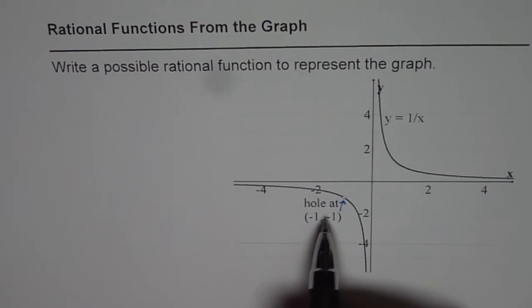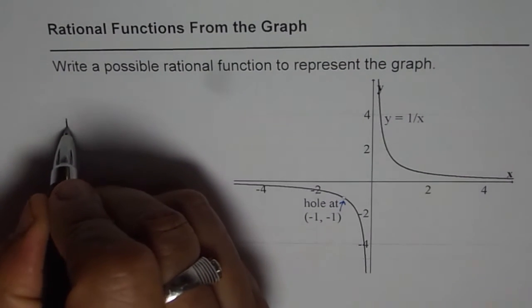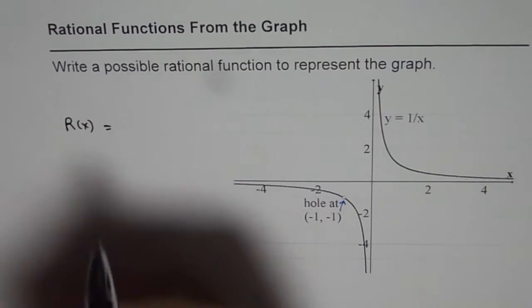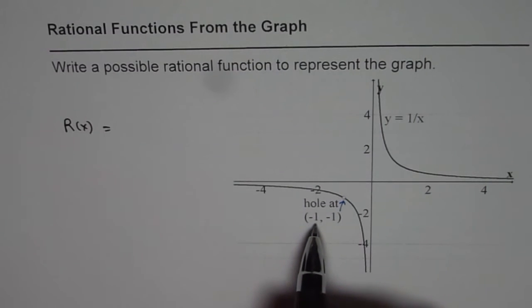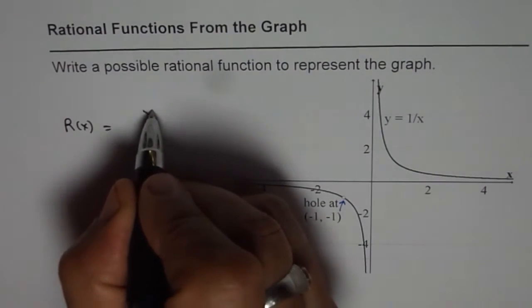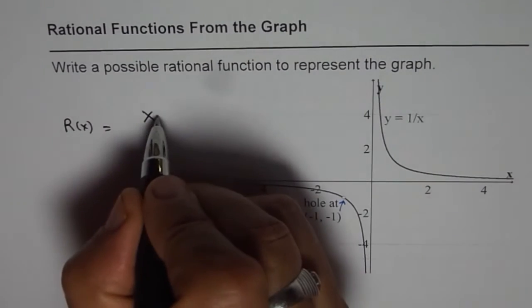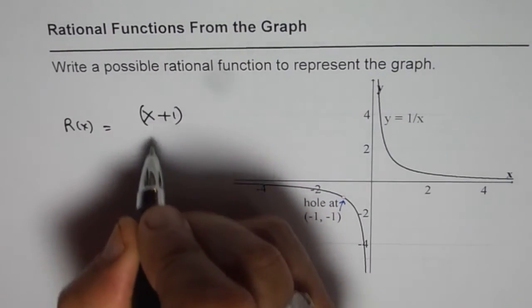Now since we have a hole, it means what? It means that the rational function will have a common factor in numerator and denominator which should be zero at this x value. So that means this x value is -1, so the common factor is (x + 1). Do you understand?